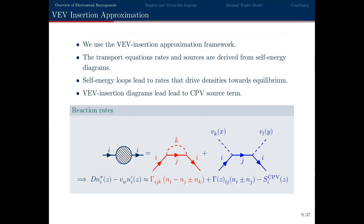Throughout my work we use the VEV insertion approximation to derive these transport equations. You derive the transport rates by evaluating self-energy diagrams — when expanded, the loop contributions give you reaction rates that drive species towards chemical equilibrium. You also get diagrams with VEV insertions where spatially varying VEVs, if the Yukawa couplings involve CP violation, give you a source term that is non-zero at the bubble wall, plus other rates driving particles towards equilibrium. You evaluate all these diagrams, set up differential equations, solve them, and get the final baryon asymmetry.